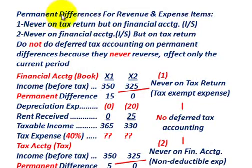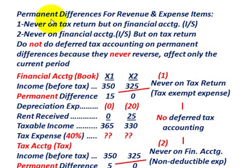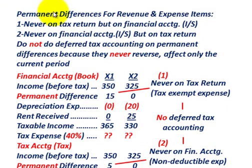What we're going to be going over here is what they call permanent differences for revenue and expense items when we're dealing with tax accounting. We really have two different cases when dealing with these permanent differences. Case one is where the permanent difference would never be recorded on the tax return, but it would be recorded for financial accounting purposes on the income statement.